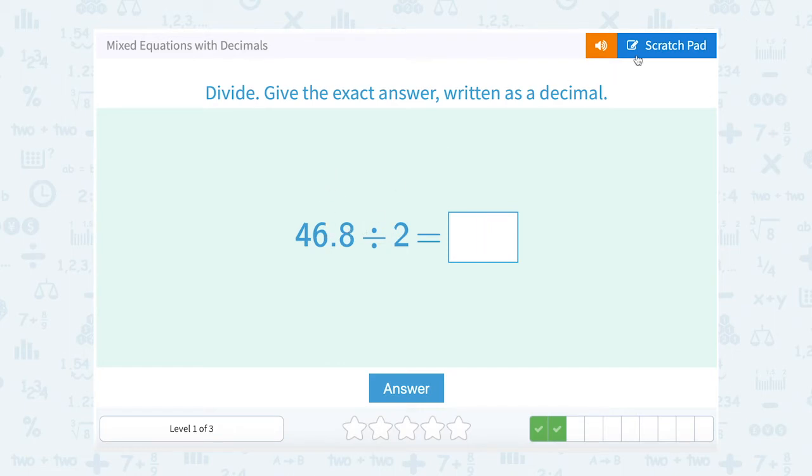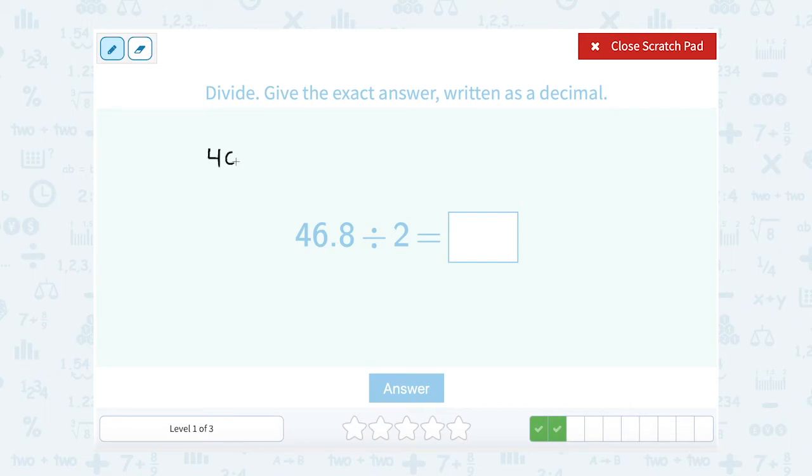46.8 divided by 2. Just like I did in the last problem, I'm going to rewrite this so it looks like a long division problem. 46.8 divided by 2, and then I'm going to line up my decimal right above where the decimal is here. 2 goes into 4 two times. 2 times 2 gives me 4, so that's 0 left over.